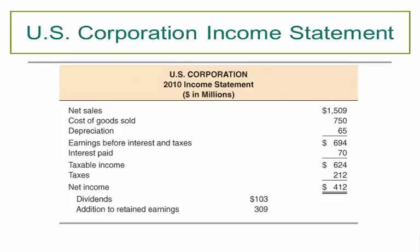A typical income statement flows as follows: start with Sales, subtract Cost of Goods Sold (COGS) and Depreciation to arrive at EBIT — Earnings Before Interest and Taxes. Then subtract interest paid on debt to get Earnings Before Taxes. After subtracting taxes, you have Net Income. In this example, Sales of $1,509 minus COGS of $750 and Depreciation of $65 gives EBIT; after interest and taxes, net income is split: $103 to dividends and $309 to retained earnings.